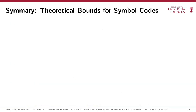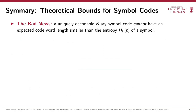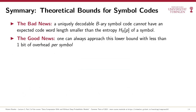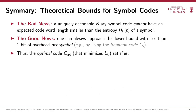To summarize: the bad news is that a uniquely decodable B-ary symbol code cannot have an expected codeword length smaller than the entropy. The good news is that the Shannon code achieves an expected codeword length less than 1 bit above the entropy. For fitting probabilistic models, the expected codeword length of an optimal symbol code is sandwiched between the entropy and the entropy plus 1 bit.